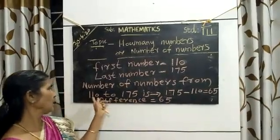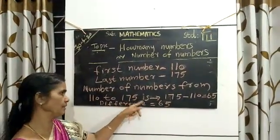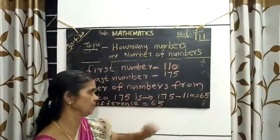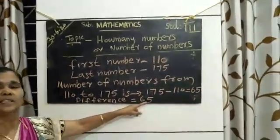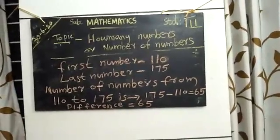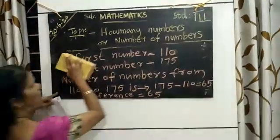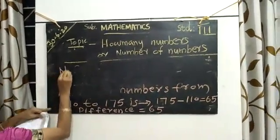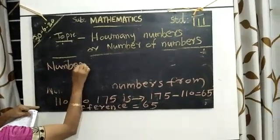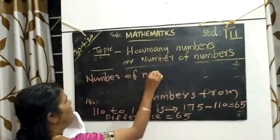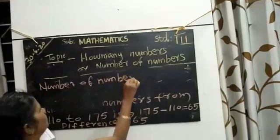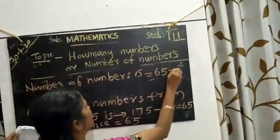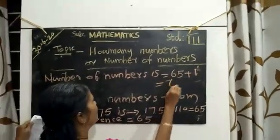Number of numbers from 110 to 175 is 175 minus 110 equals 65. Difference we got is 65. Then number of numbers is 65 plus 1 equals 66.